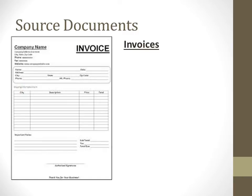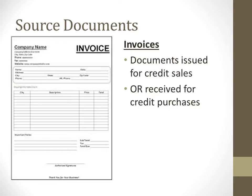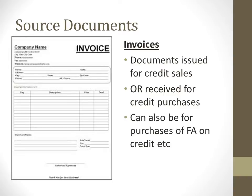We begin with invoices. Invoices are documents issued for credit sales. It could also be documents received for credit purchases. If you issue, you must be the seller; if you receive, then you must be the buyer. It can also be for purchases of fixed assets on credit. On credit means money is owing — payment has not been made. For example, if you have made a sale on credit, it means that your customer has not paid you.